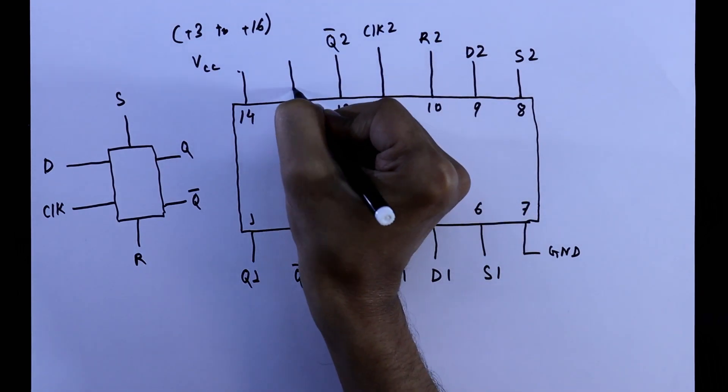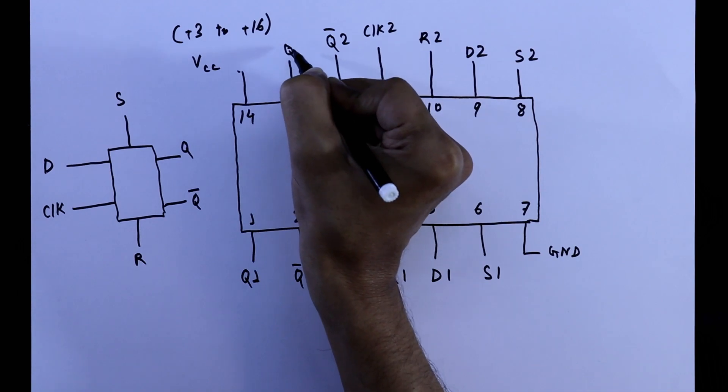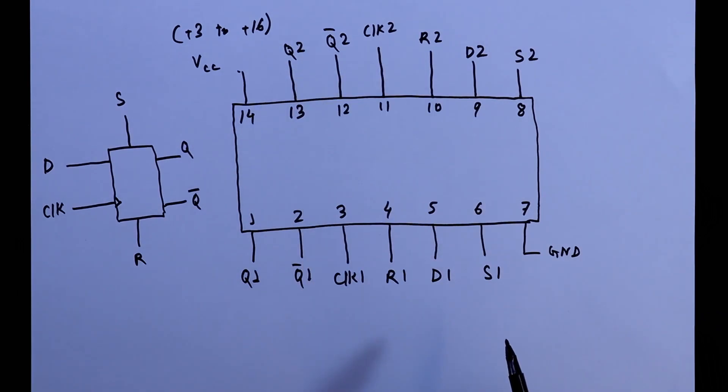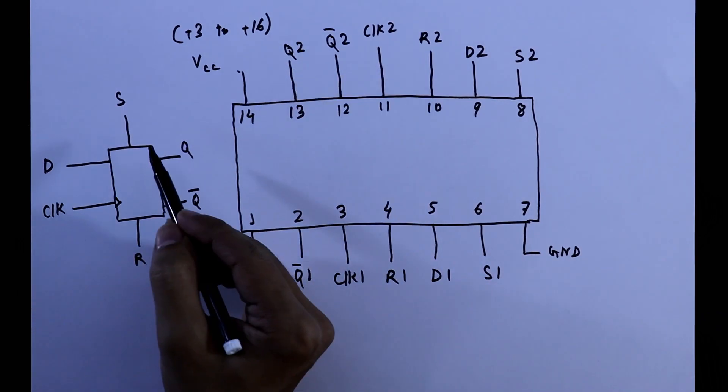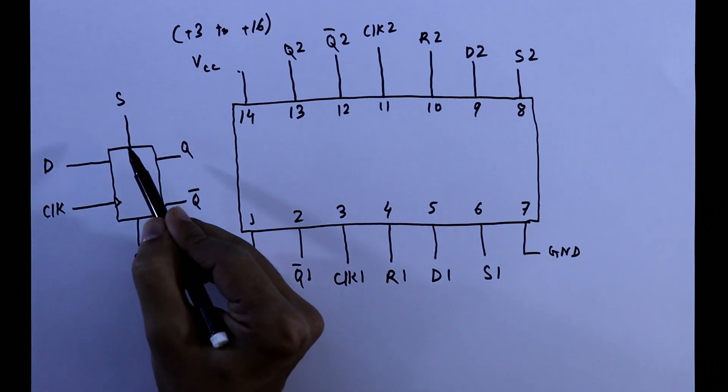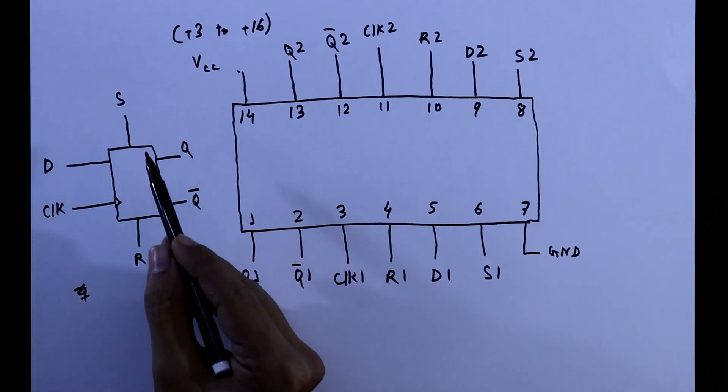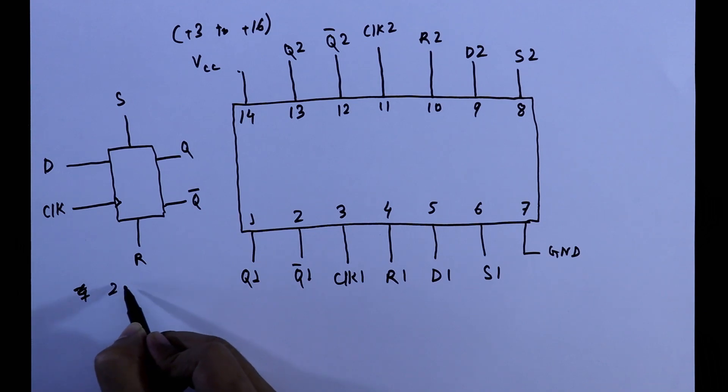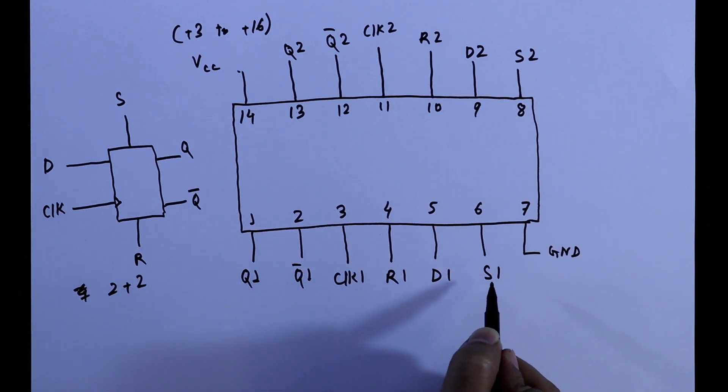Now we will see the truth table for D flip flop without these 2 pins and with these 2 pins. Without these 2 pins, we have 2 inputs and 2 outputs. With reset and set, we have 4 inputs and 2 outputs.